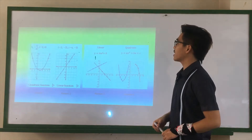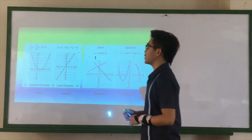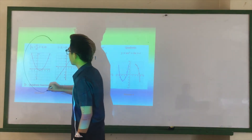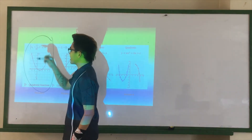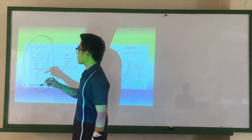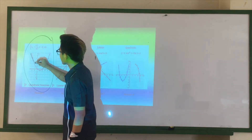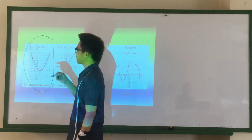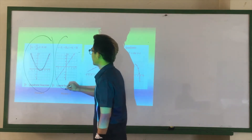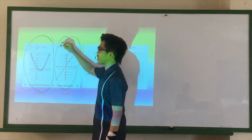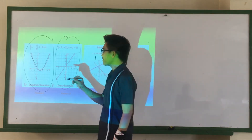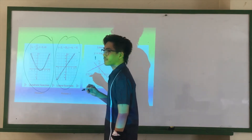First, by looking at its graph. The first picture — it is a quadratic function. The graph has a curved line. The second picture — it is a linear function. The graph has straight lines.